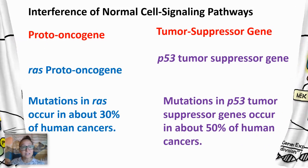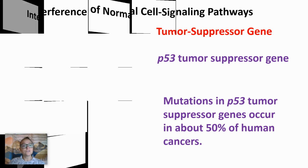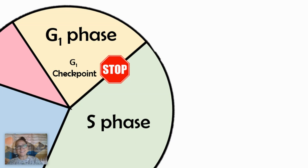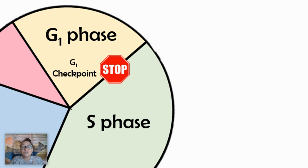P53 is a tumor suppressor gene — it stops the cell from dividing and prevents uncontrolled cell growth. The G1 checkpoint is super important: we only want healthy cells to divide. The P53 protein comes into play when cells have too much DNA damage — we want to stop and inhibit them at this point, not let them go on to S phase. If they go into S phase, they'll divide, and you'll have two copies of abnormal cells, then four, then eight, then sixteen — rapid uncontrolled cell growth.